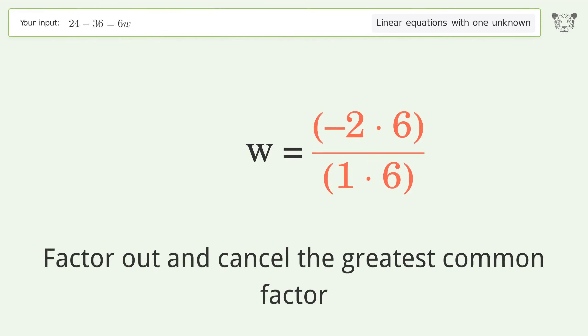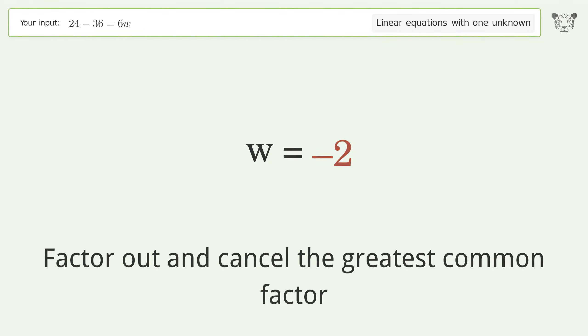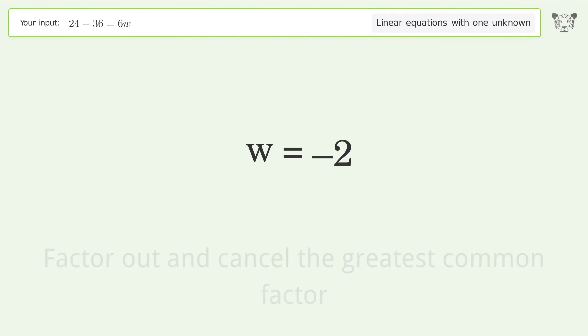Factor out and cancel the greatest common factor. And so the final result is w equals negative 2.